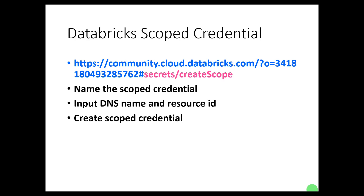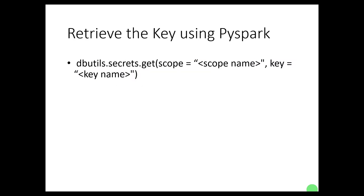Once the scoped credential is created, we can retrieve the key using PySpark. The syntax starts with dbutils.secrets.get, and we provide the scope name — in this case AzureKV-scope — and the key name, which is azure-sql-password as created in Azure Key Vault. When this PySpark code runs, it will retrieve the value from the key vault, which would be test@1234. Let me perform that step in the notebook.